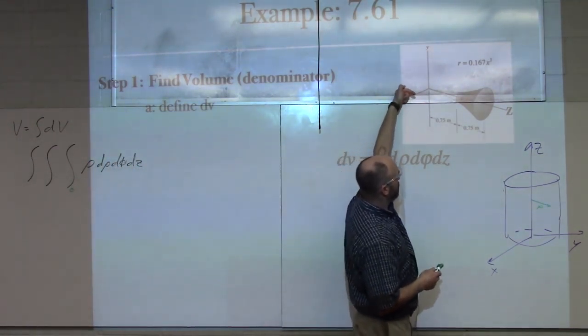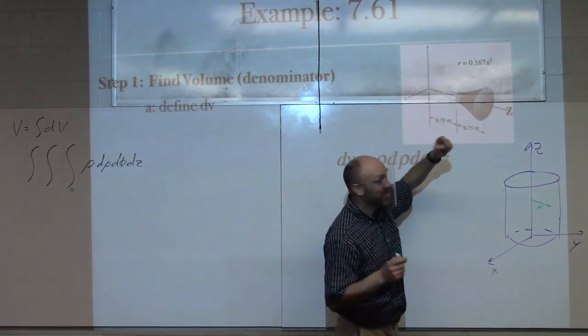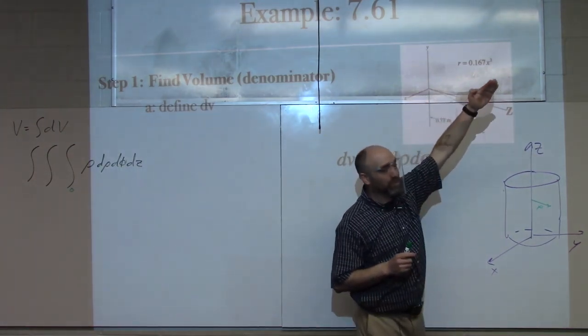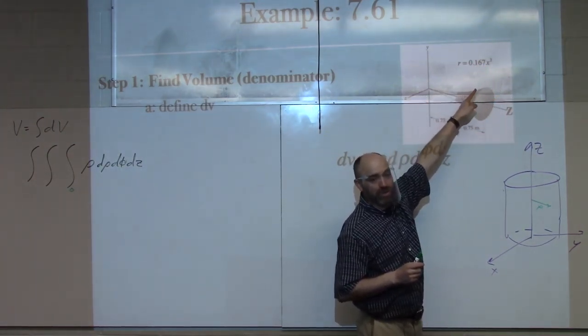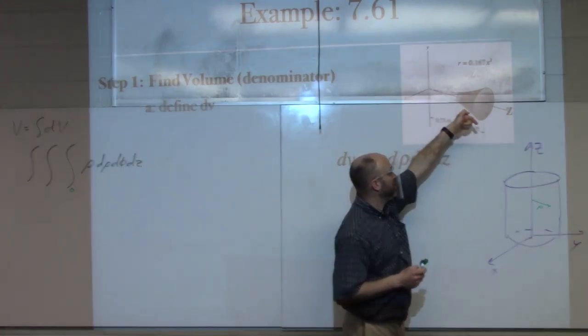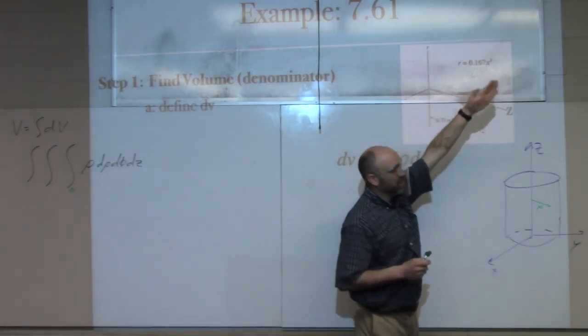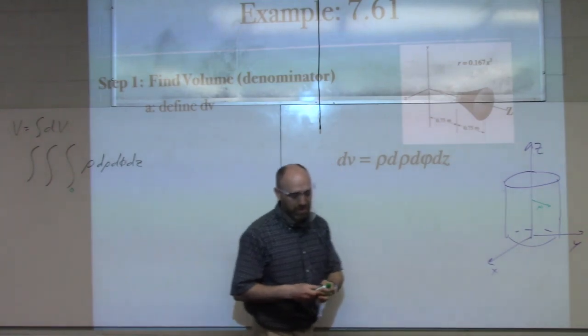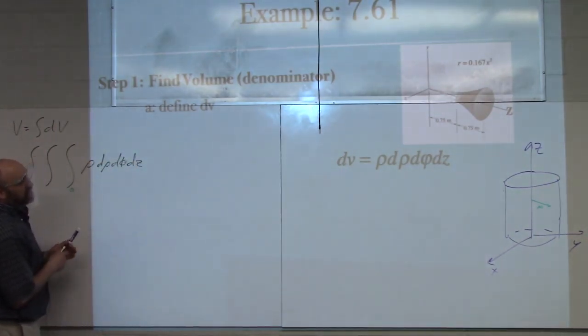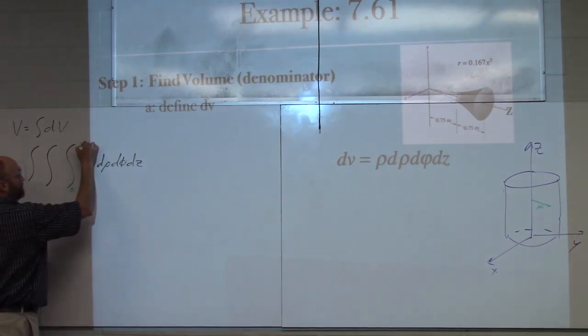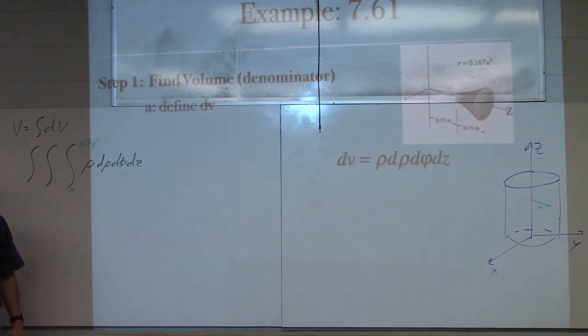Okay? Because, here's what this says. As you go out this z axis, that shape gets steeper and steeper, because it's a parabola. So, as z increases, the shape gets steeper. So, this goes from zero, from the center, because that's where rho always goes from, to 0.167 z squared. Does that make sense to everybody?